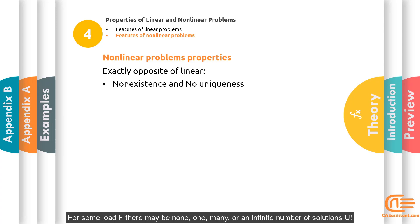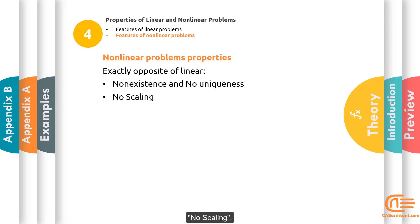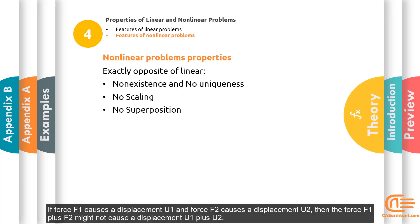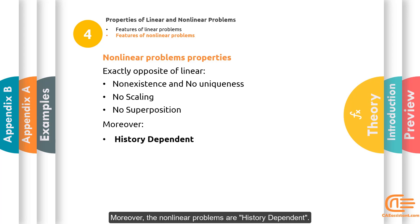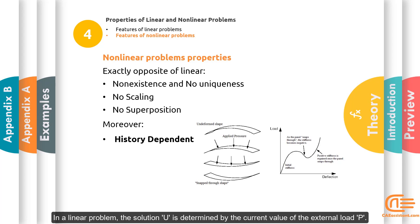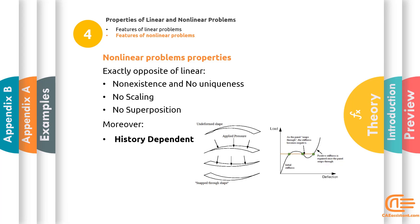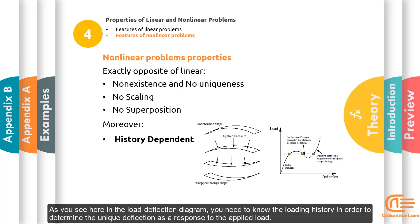For some load F, there may be none, one, many, or an infinite number of solutions U. No scaling: if force F1 causes a displacement U1 and force F2 causes a displacement U2, then the force F1 plus F2 might not cause a displacement U1 plus U2. Moreover, the nonlinear problems are history-dependent. In a linear problem, the solution U is determined by the current value of the external load P. In a nonlinear problem, the unique solution U at time t is determined by the entire load history of P(t). As you see in the load deflection diagram, you need to know the loading history in order to determine the unique deflection.